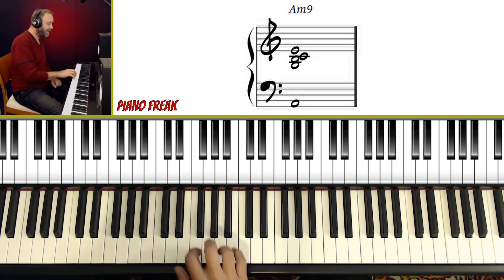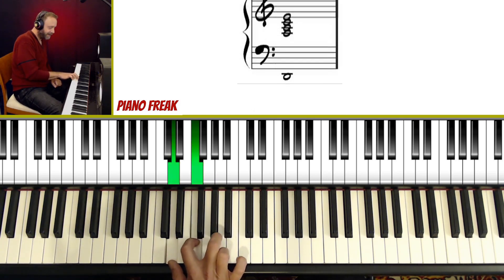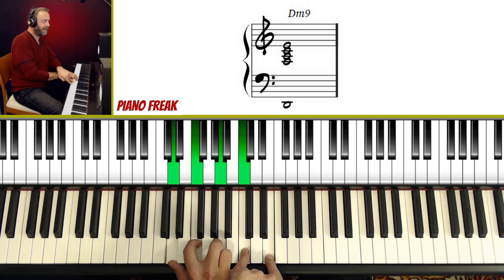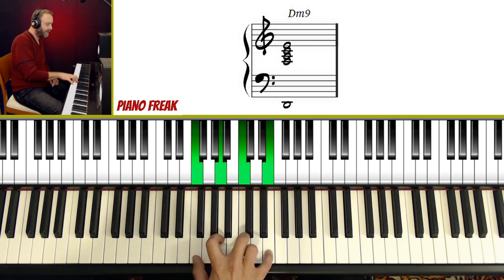Let's take another chord. Let's take Dm9. This is Dm9. We have the root, 3rd, 5th, 7th, 9th. Now I'm going to take the root out, and that's the new chord. Dm9 rootless.